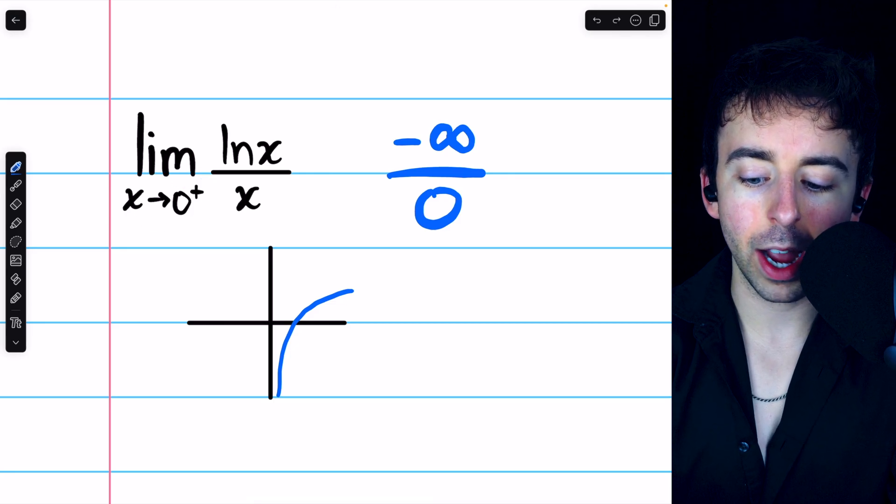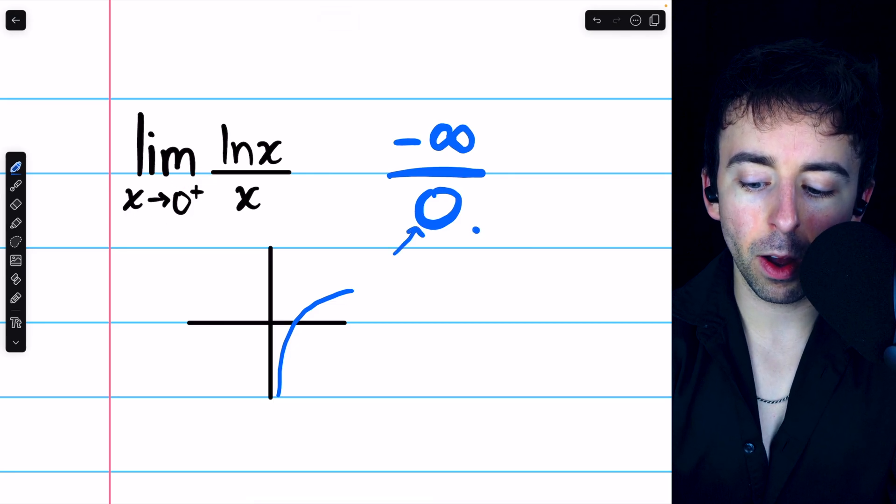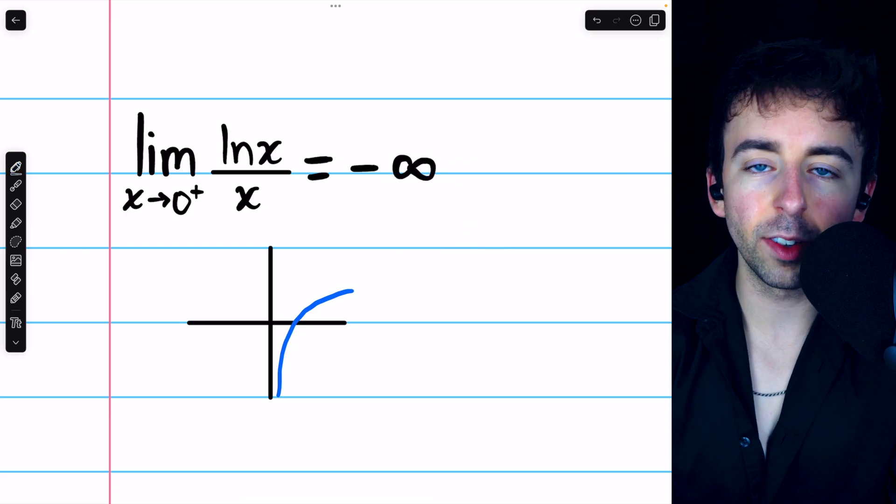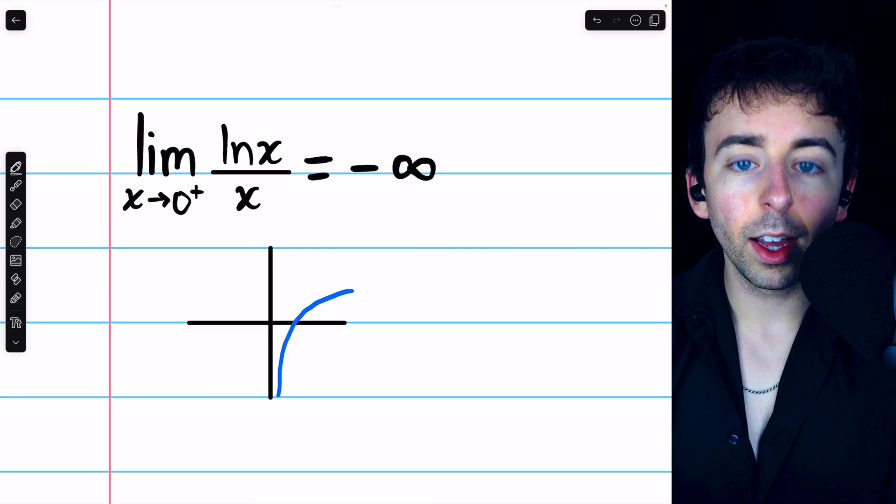It's going to 0 from the right, so these are very small positive numbers. Thus, it should be easy to see that this limit diverges to negative infinity.